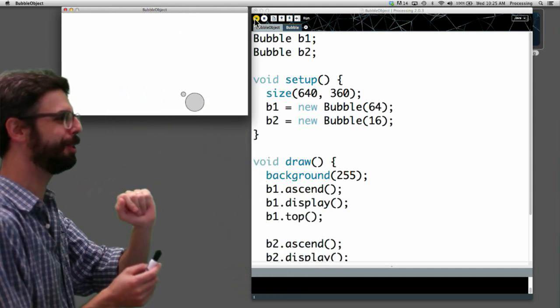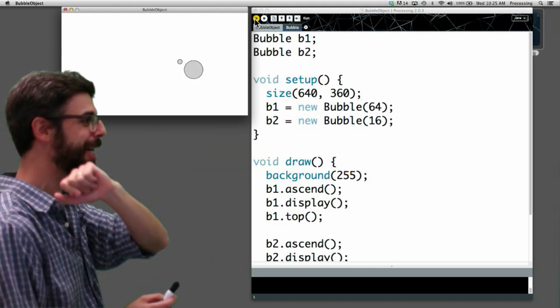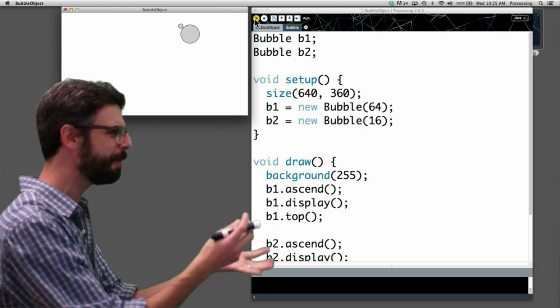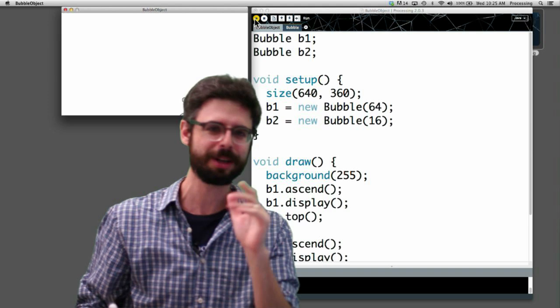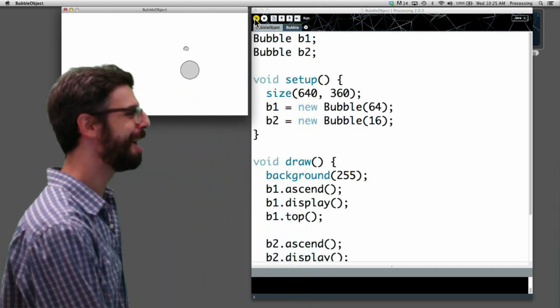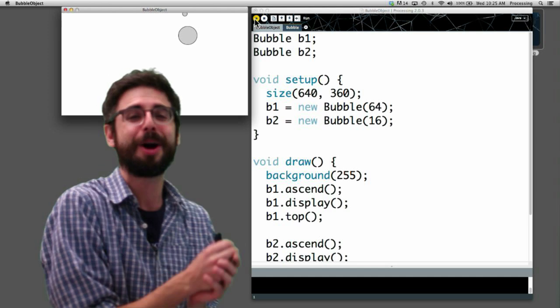What did it have? It has two bubble objects. Those two bubble objects are initialized here and set up. Some functions are called and they're floating up to the top of the screen. They're lovely. I love them. They make me feel happy.